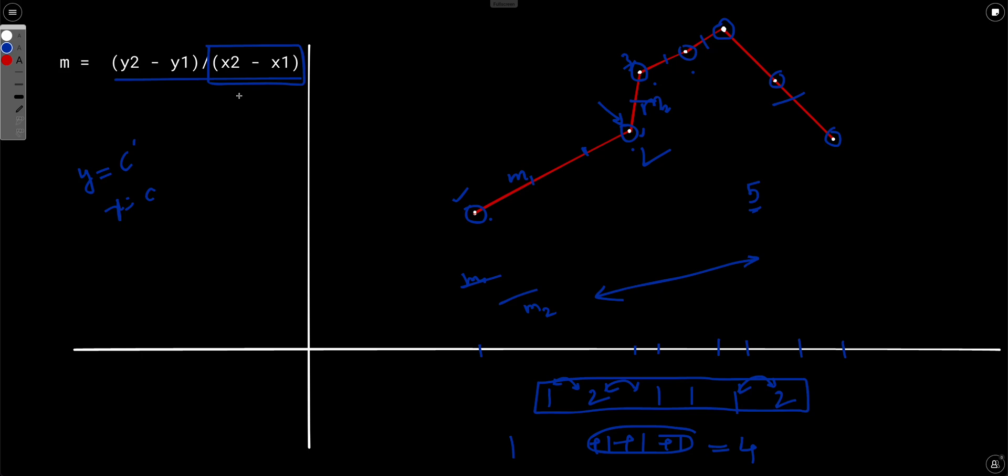So instead, a better idea would be to just maintain a pair instead of maintaining an array of integers. Let's maintain an array of pair of integers. So first will be y2 minus y1. Second will be x2 minus x1.